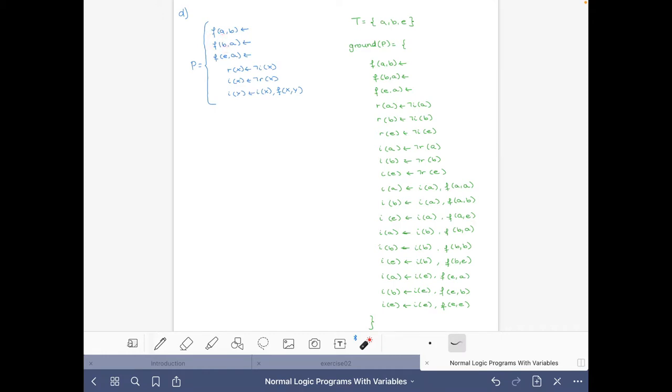So first we have to find the ground instantiation of the program, and I have it already here. For this, first we write the Herbrand universe that has these three constants a, b, and e, and then we proceed rule by rule.